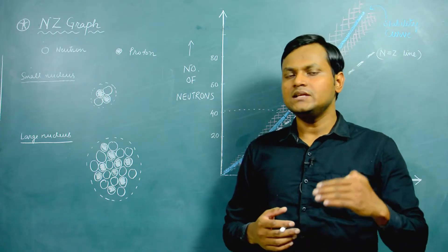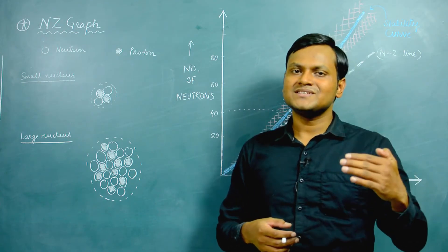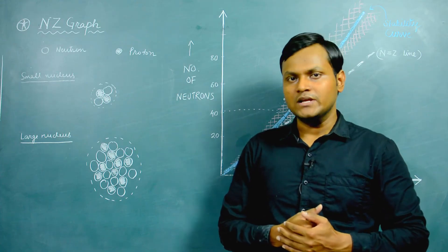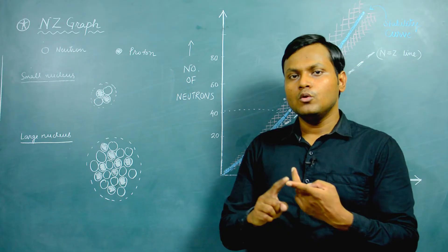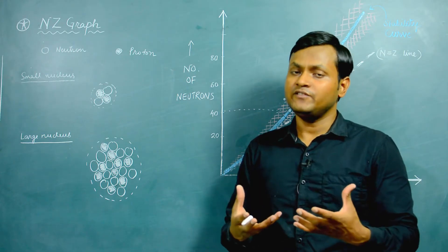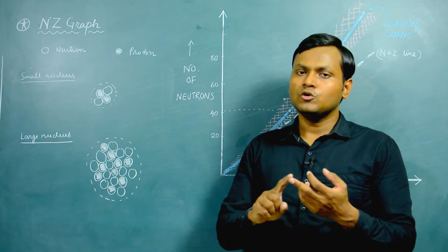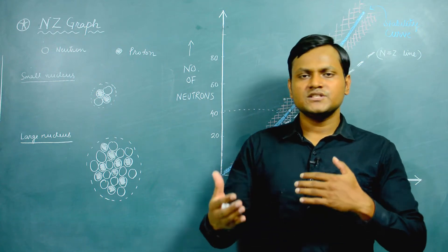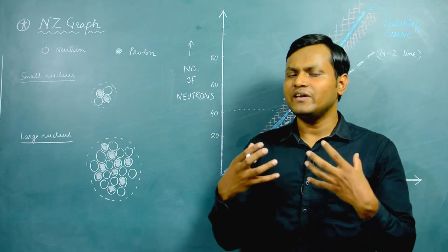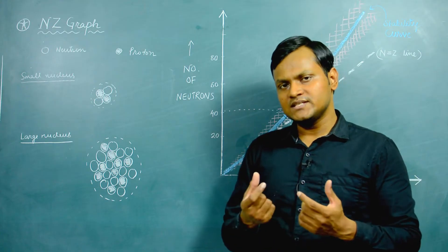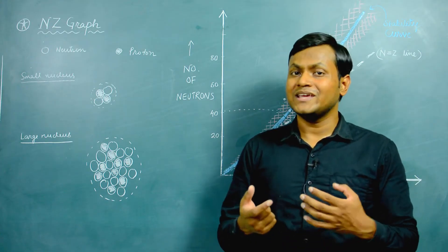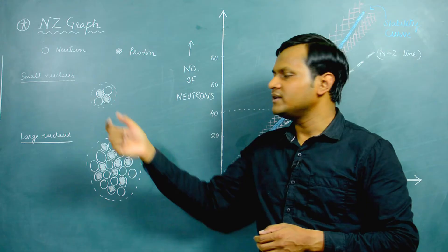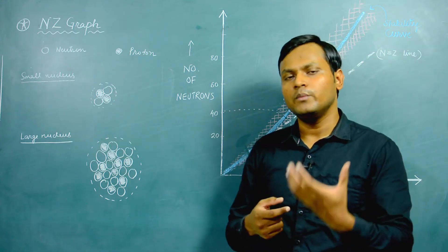The second observation — that for larger nuclei neutrons exceed protons — results from differences in the forces inside the nucleus. There are two kinds of forces: the strong nuclear force, which acts between all particles and is attractive, acting as a glue holding the nucleus together; and Coulombic repulsion, which exists only between protons and tries to break the nucleus apart. The strong nuclear force is very strong only at extremely short distances of a few femtometers, so for small nuclear sizes all particles are close together and the strong force dominates.